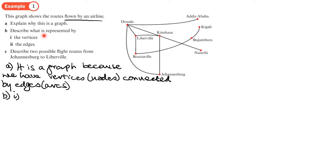First part of part B, describe what is represented by the vertices. So these are the different towns that the airline flies to.